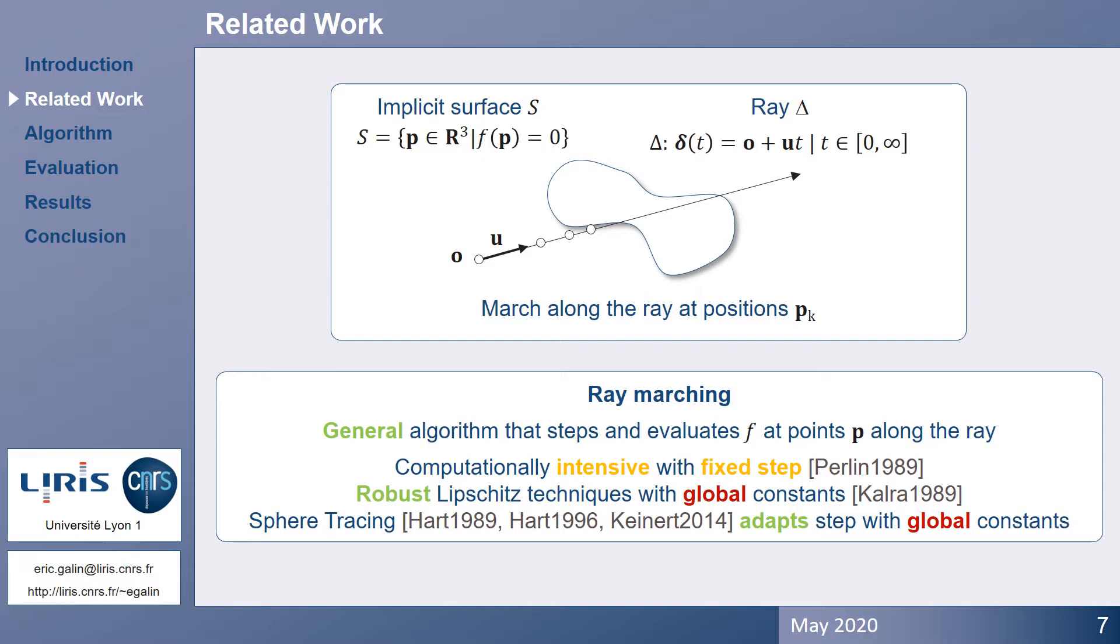Lipschitz functions provide an interesting framework for ray tracing implicit surfaces. Sphere tracing, in particular, requires the knowledge of a global Lipschitz bound of the field function. Contrary to ray marching, the algorithm uses adaptive steps and provides an exclusion criterion to avoid stepping through the surface by accident. One limitation of this method is that it relies on a global Lipschitz bound only, which reduces the overall performance. This is a very drawback, and this is what we address in our work.